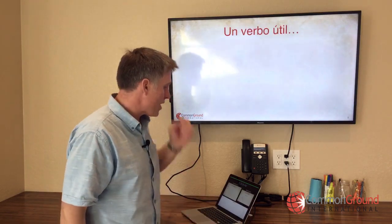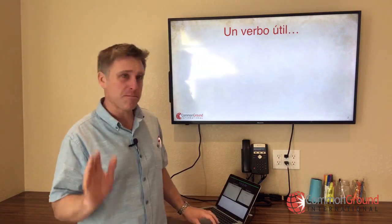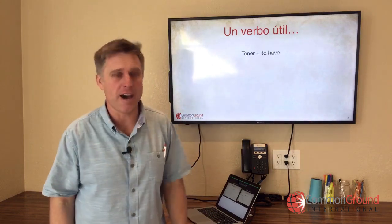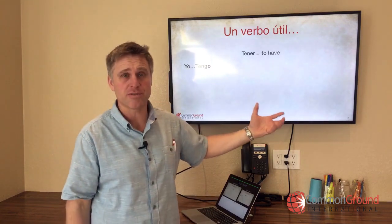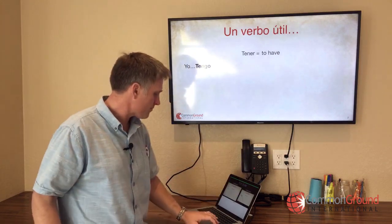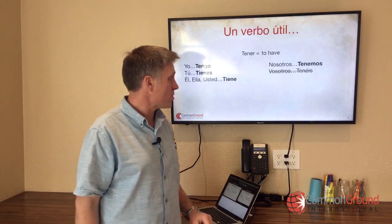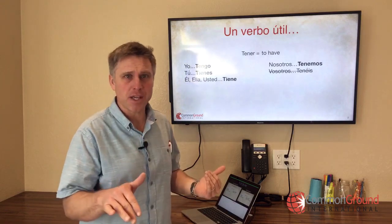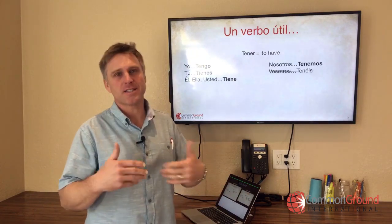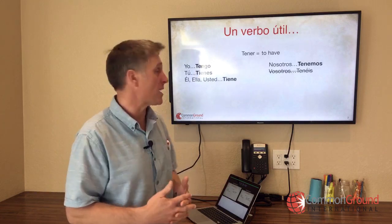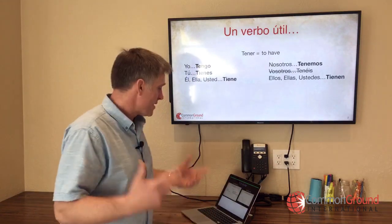Vamos a empezar with un verbo útil — one useful verb. Un verbo útil para empezar es el verbo tener, the verb to have. This verb is irregular, so the yo form doesn't follow regular conjugation rules: yo tengo, tú tienes, él/ella/usted tiene, nosotros tenemos, vosotros tenéis — scratched out because in the Americas we don't use that form much — ellos/ellas/ustedes tienen.